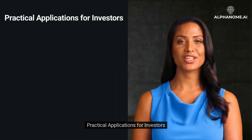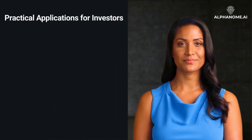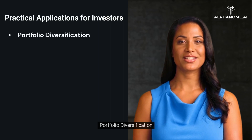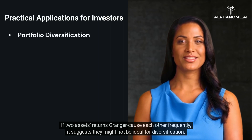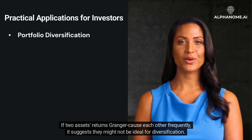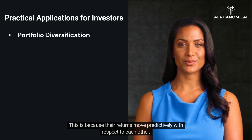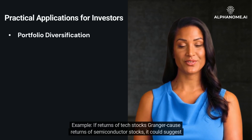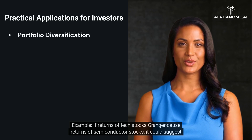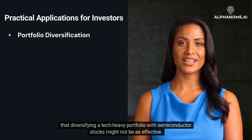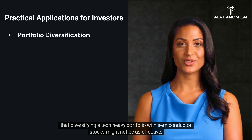Practical Applications for Investors — Portfolio Diversification: If two assets' returns Granger-cause each other frequently, it suggests they might not be ideal for diversification, because their returns move predictively with respect to each other. For example, if returns of tech stocks Granger-cause returns of semiconductor stocks, it could suggest that diversifying a tech-heavy portfolio with semiconductor stocks might not be as effective.